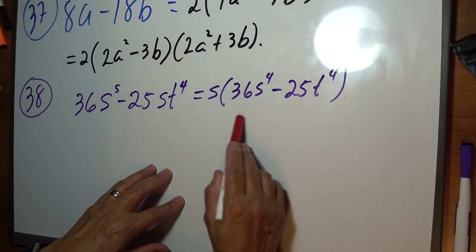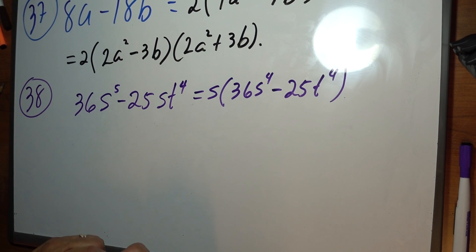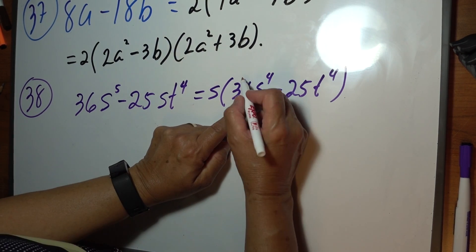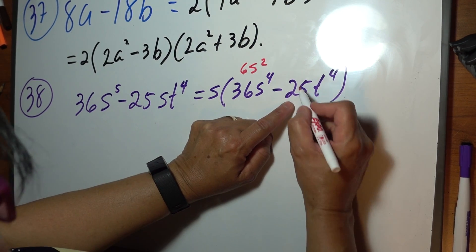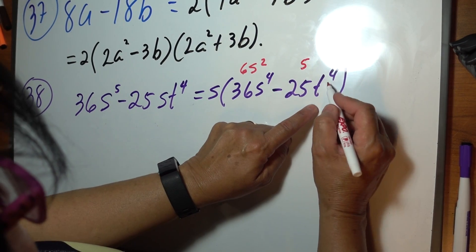Square root of 36 is 6. Square root of S to the 4th is S squared. Square root of 25 is 5. Square root of T to the 4th is T squared.